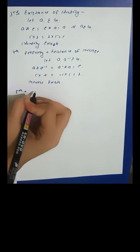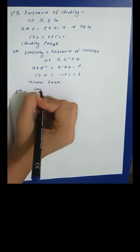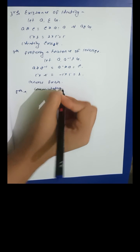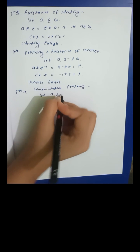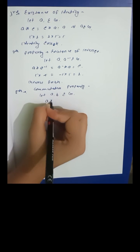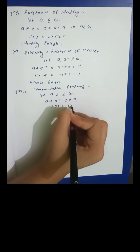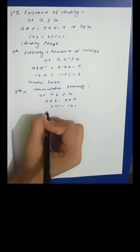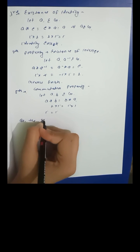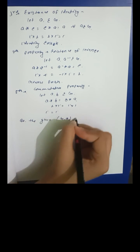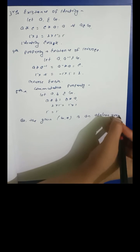The fifth property for an abelian group is commutativity: a★b = b★a for all a, b in G. For example, 1×iota = iota×1 = iota. Since all five properties are satisfied, the given set G under multiplication is an abelian group.